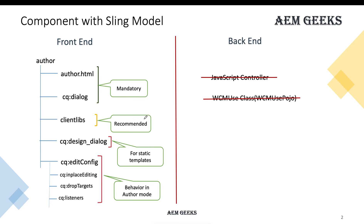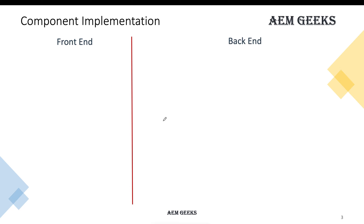Sling Models are a separate Apache project, but AEM has adopted that project and all the APIs are available within AEM — you don't need to install anything additionally or any third-party API. All the APIs come bundled with AEM. To understand how we create these controllers, you can refer to the architecture diagram: for the back-end you write one interface and one implementation class.